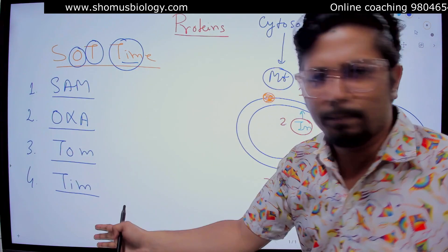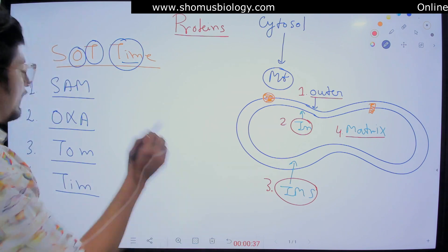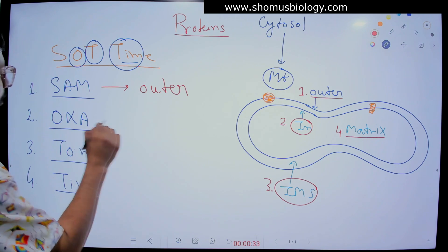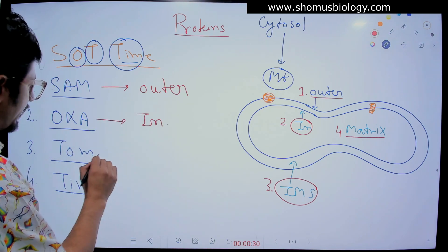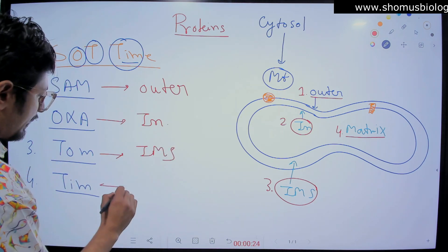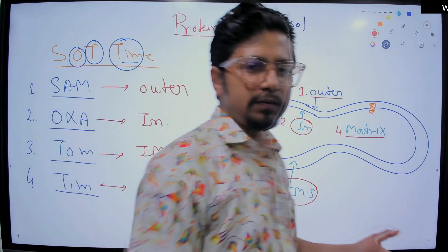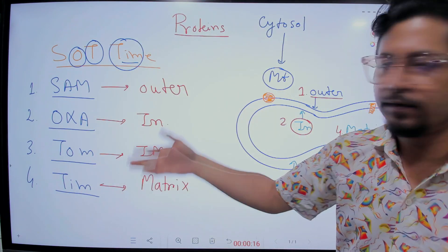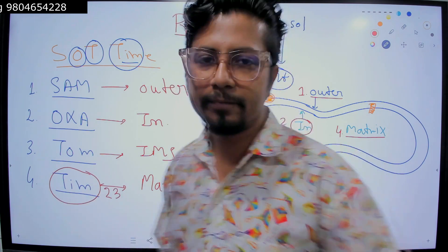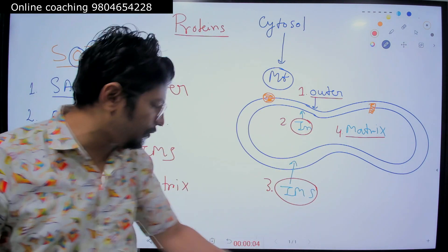Now, where do each of these complexes deliver proteins? To simplify: the SAM complex delivers proteins to the outer membrane of mitochondria. OXA delivers to the inner membrane of mitochondria. TOM delivers proteins to the intermembrane space of mitochondria. TIM delivers proteins to the matrix of mitochondria. That's how easy it is. When we say TIM, we are specifically talking about TIM23. These are all the proteins involved in the process of protein translocation inside mitochondria, and my time is almost over.